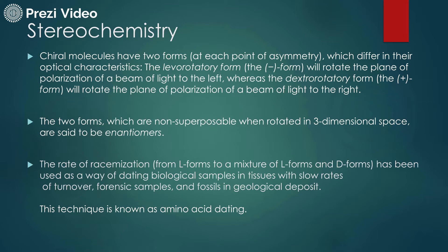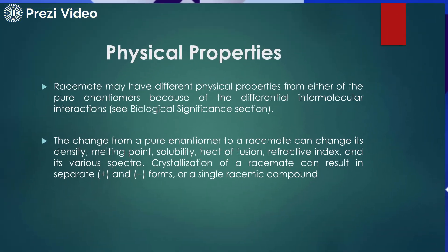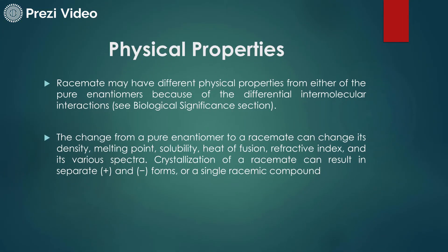Why do we study this in pre-formulation studies? Because due to the conversion from one form to another, the chemical properties also become different. Melting point, boiling point, and other properties may be altered when a drug substance undergoes optical rotation changes. Racemates may have different physical properties from either pure enantiomer because of their different intermolecular interactions. The change from a pure enantiomer to a racemate can alter its density, melting point, solubility, heat of fusion, refractive index, and various spectra.